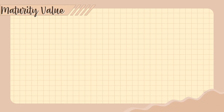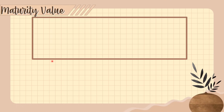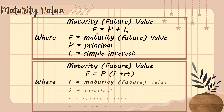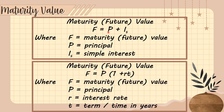Now let's discuss maturity value. What is maturity value? We have the formula F is equal to P plus I sub S, where F stands for maturity or future value, P stands for the principal, and I sub S is the simple interest.